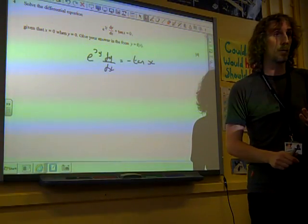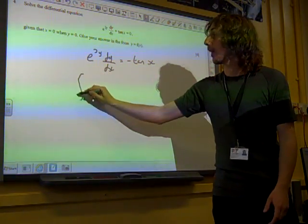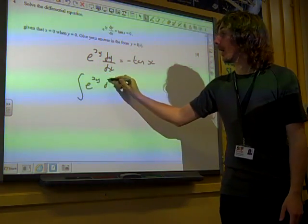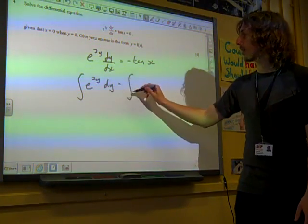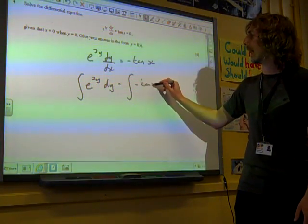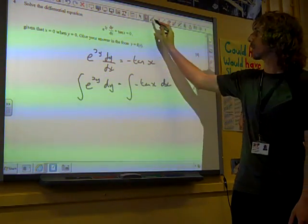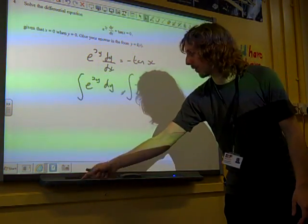Now we integrate both sides with respect to x, this gives us e to the 2y dy is the integral of minus tan x dx.